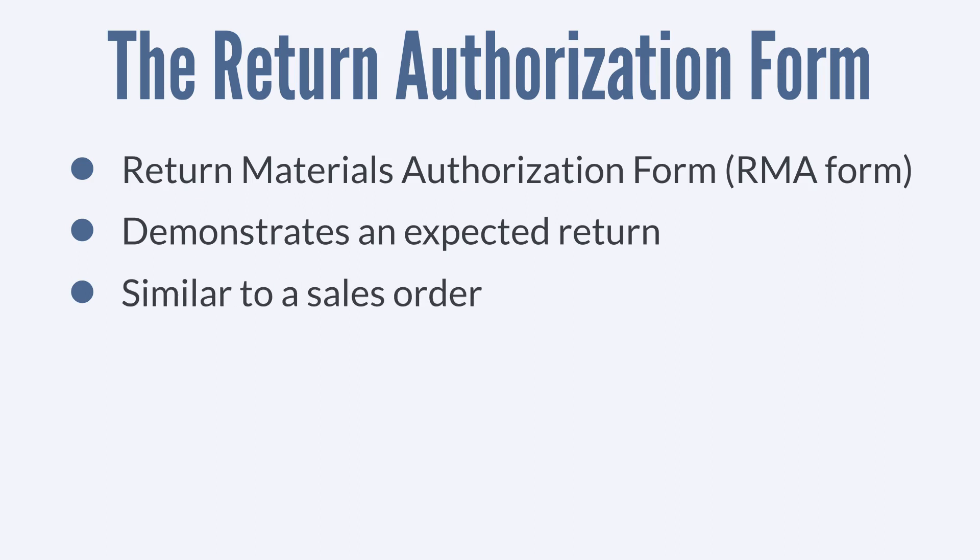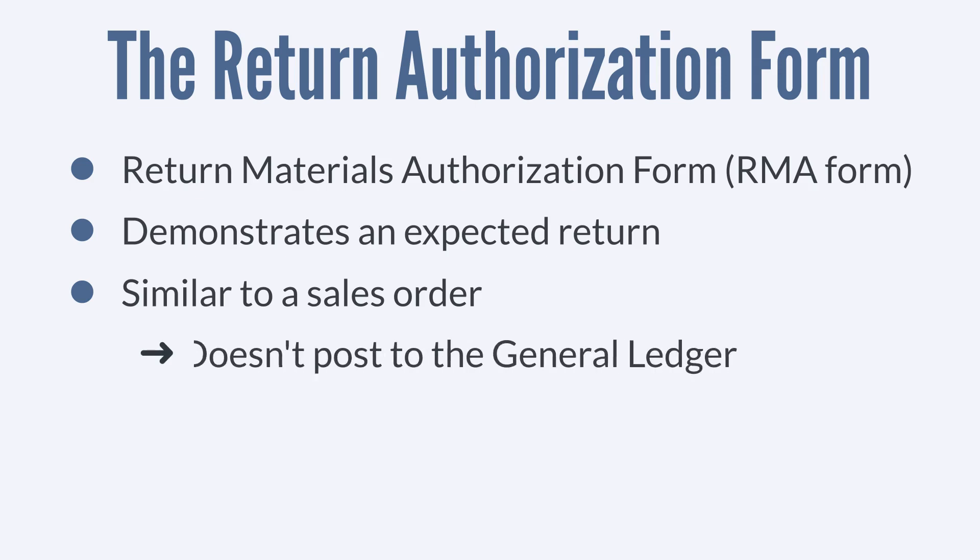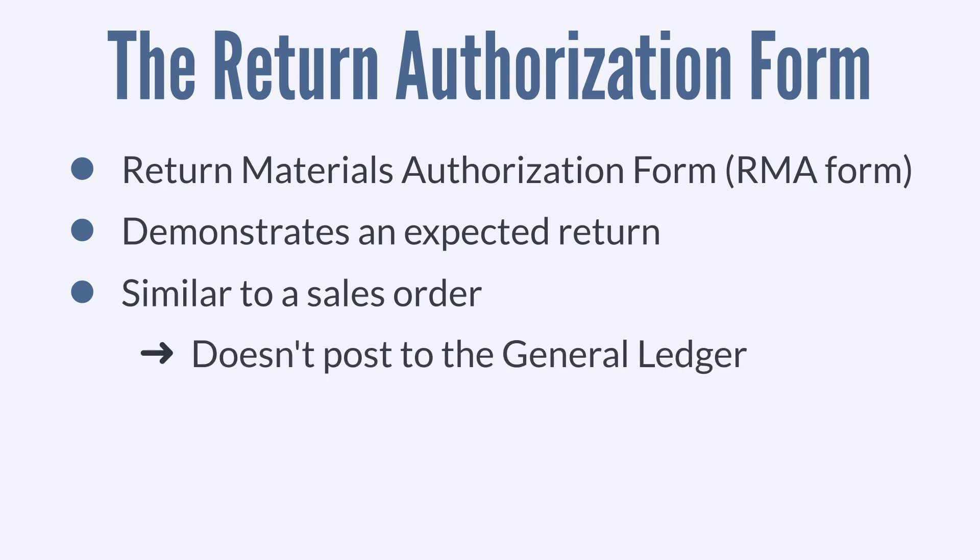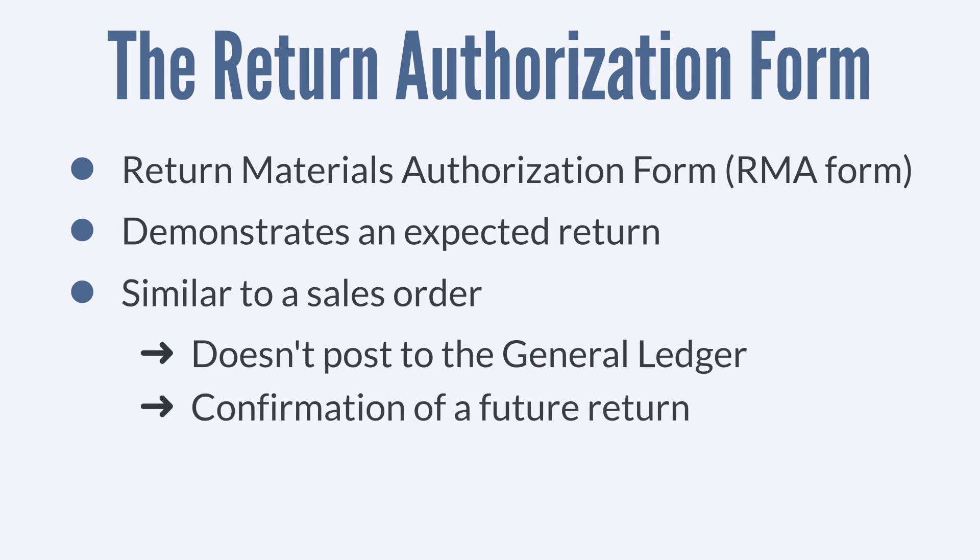An RMA form shares some similarities with sales orders. For example, like sales orders, an RMA record doesn't post to the general ledger. And even as sales orders act as a sort of confirmation that a sale will eventually take place, return authorization forms act as a confirmation that a return will take place. No money actually changes hands yet.